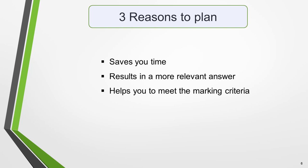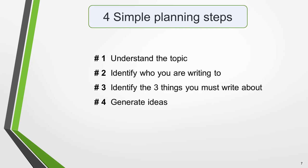Next we'll look at how to plan your letter. It's very important that you take time to plan before you begin writing. There are three reasons for this: planning will save you time, it will result in a more relevant answer, and it will help you to meet the marking criteria. There are four steps to writing a high-scoring formal letter: 1. Understand the topic. 2. Identify who you're writing to. 3. Identify the three things you must write about. And 4. Generate ideas. Once we've completed this quick and simple process, we'll be ready to write a high-quality letter.